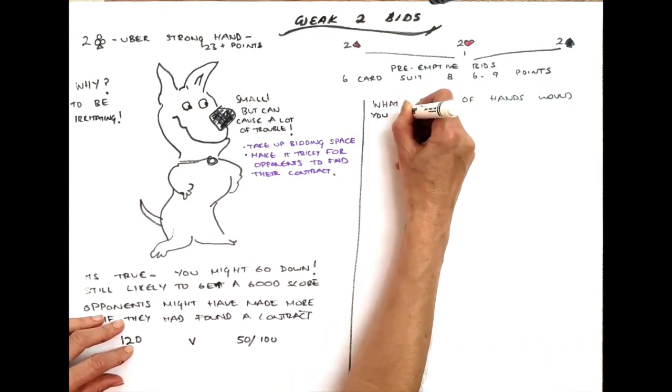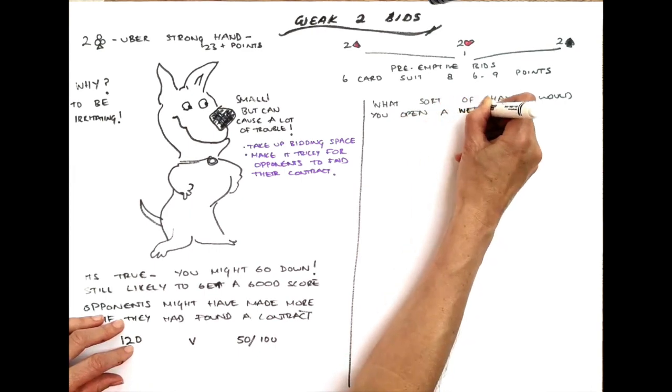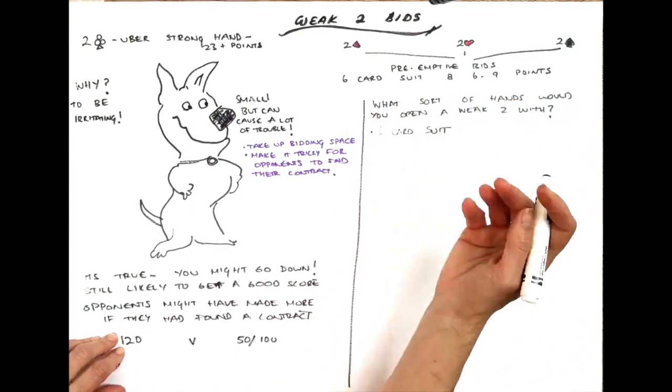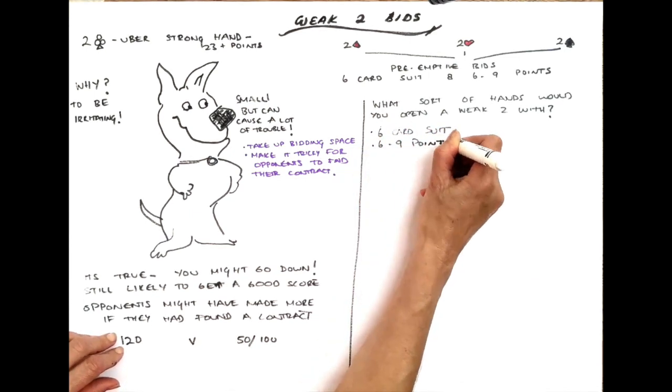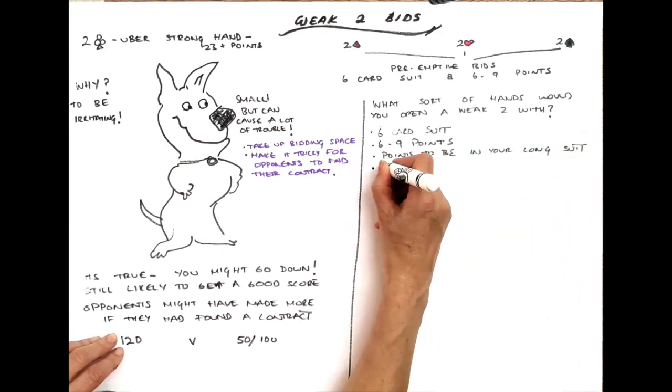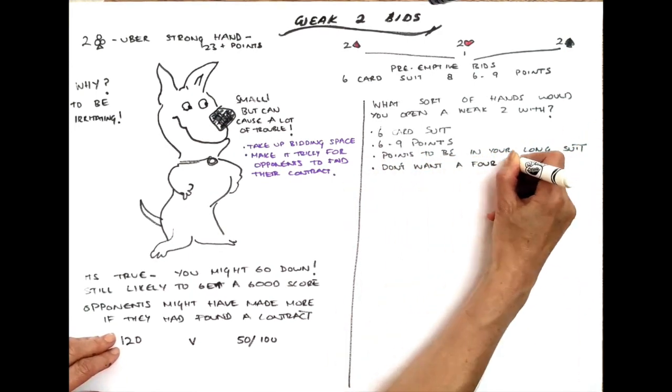So what are the best sort of hands for opening a weak two with? You want to have a six card suit. You want to have between six and nine points. And you want those points to be in your long suit. You also don't want to have a four card major on the side.